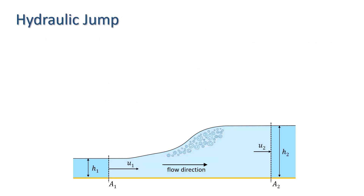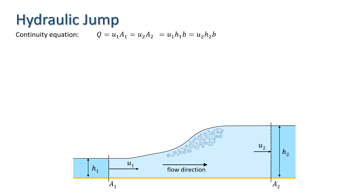Let's proceed with our analysis. First we apply the continuity equation, giving us Q equals U1·A1 which equals U2·A2. In this case we have a rectangular channel, and thus the cross-sectional area is just the water depth times the channel width b. We thus have U1·H1 equals U2·H2.